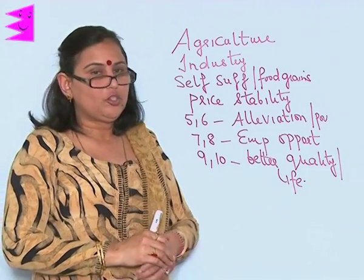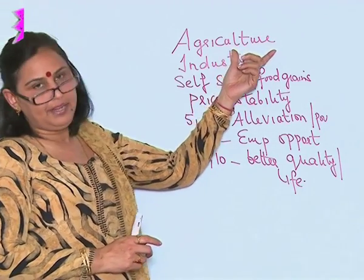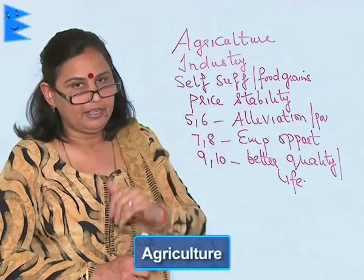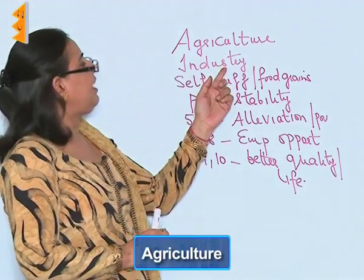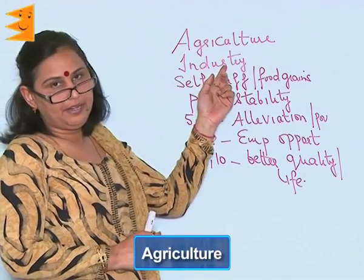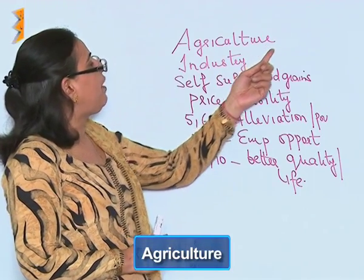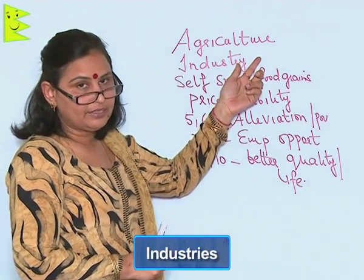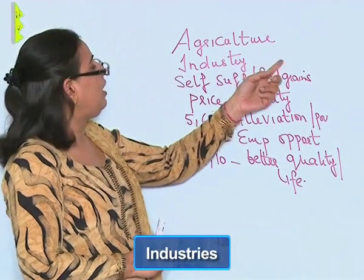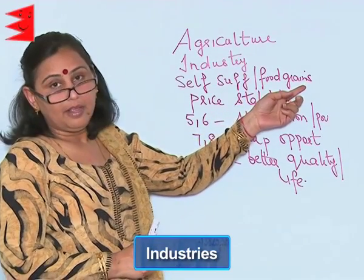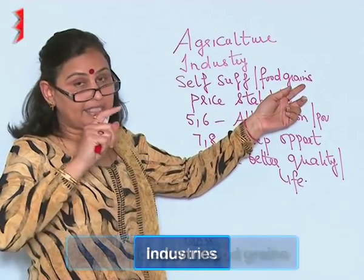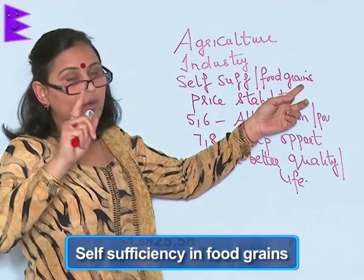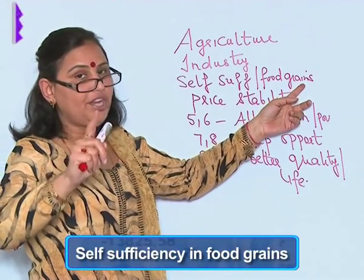The first five-year plan in India focused on agriculture. The second five-year plan shifted its focus from agriculture towards industries. The third five-year plan felt that self-sufficiency in food grains was the immediate goal required by India.